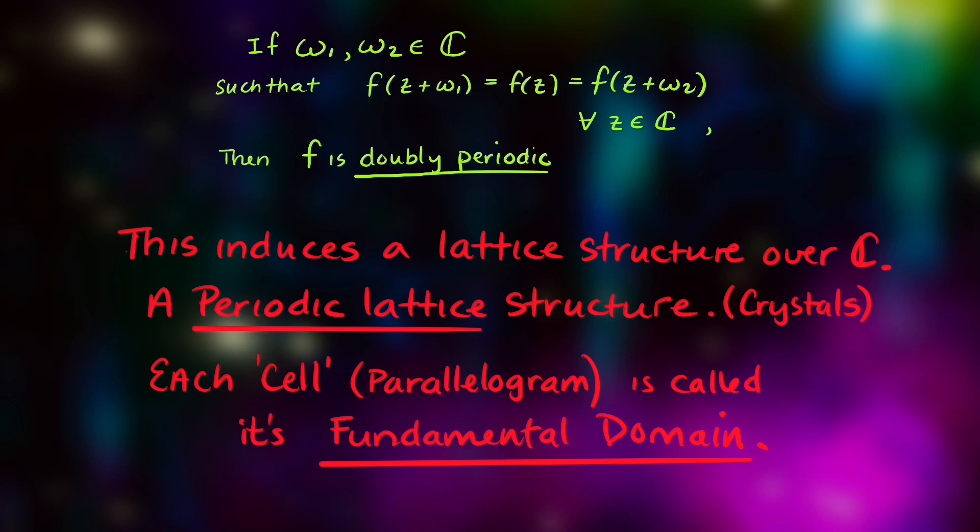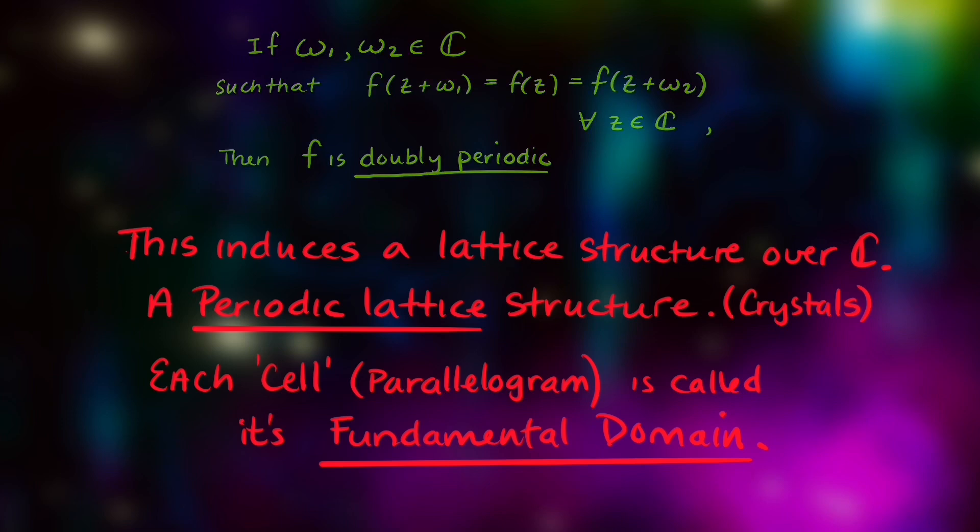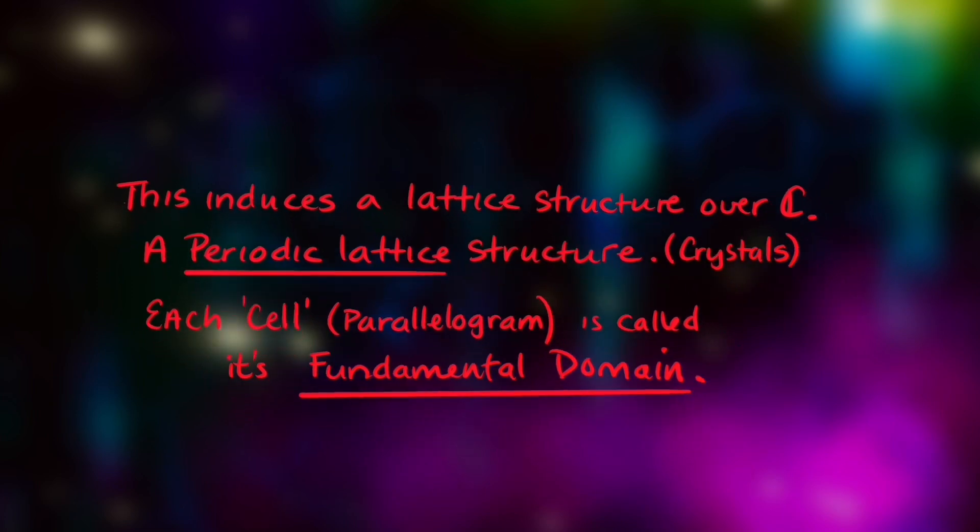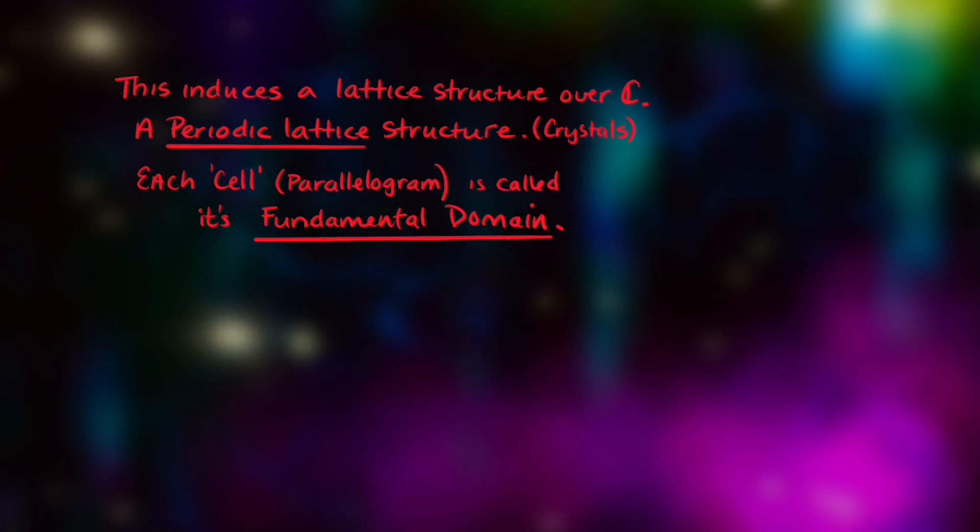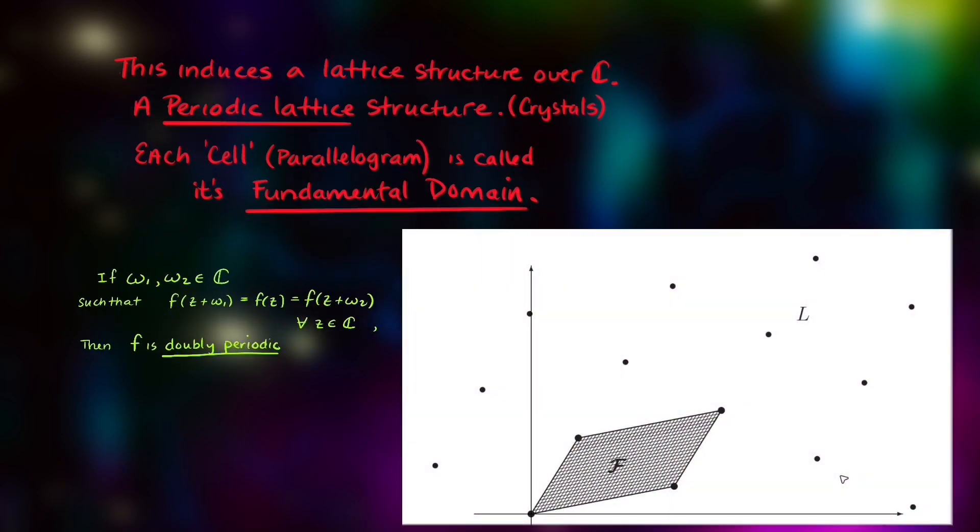A doubly periodic function induces a lattice structure over the complex numbers, a period lattice structure which is like a crystal. Each cell parallelogram is called its fundamental domain, and it looks something like this. This fundamental domain repeats itself as the parallelogram will tile the entire complex plane.